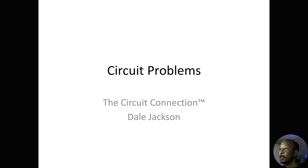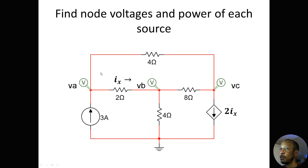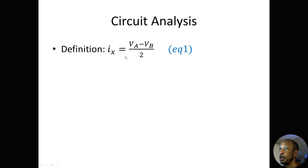In this lecture I'm going to be going over a circuit problem. The circuit problem is to find the node voltages and the power of each source in this circuit. So I have VA, VB, and VC, and I have an independent current source here, and I have a dependent current source here in the amount of 2 IX, where IX is the current between node VA and VB with that particular orientation. The definition is IX equals VA minus VB over 2. That's equation number 1.